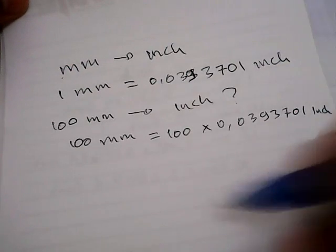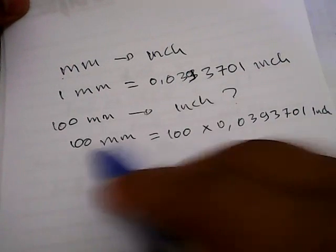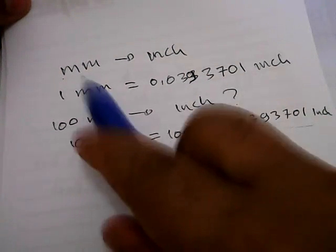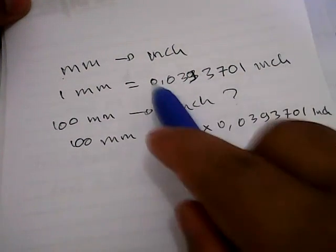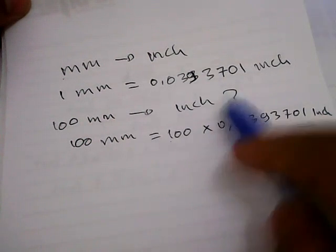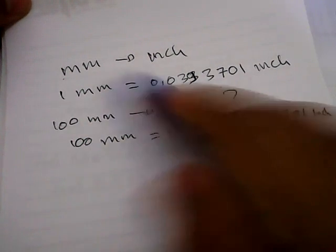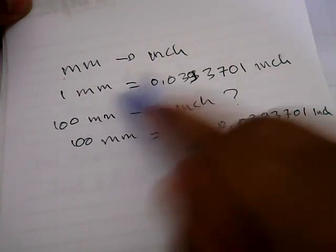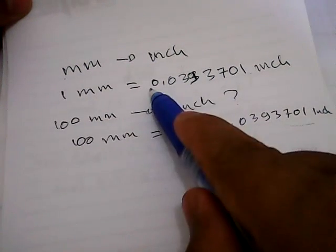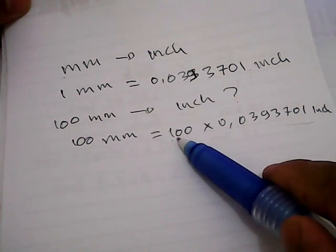Okay, why do we have to multiply 100 with this number? It's because you want to convert millimeters to inches, and this number is a conversion factor that we need to multiply with anything that comes before millimeter. In this example case, we need to multiply this number with 100.